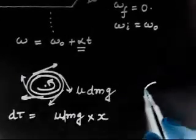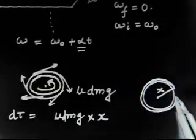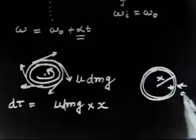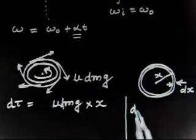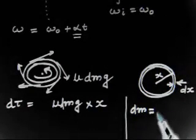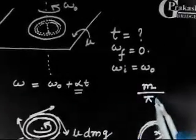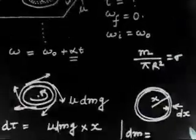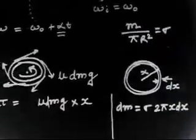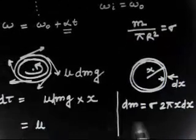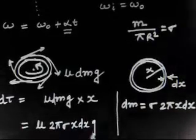Consider the elemental ring at distance x from center with thickness dx. Let the mass per unit area sigma = m / (pi·r²), where m is the total mass of the disk. Then dm = sigma · 2·pi·x·dx. So d-tau = mu · dm · g · x = mu · (2·pi·sigma·x·dx) · g · x, giving d-tau = 2·pi·mu·sigma·g·x²·dx.